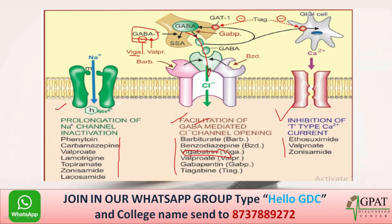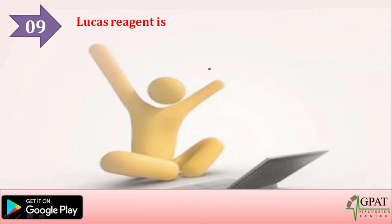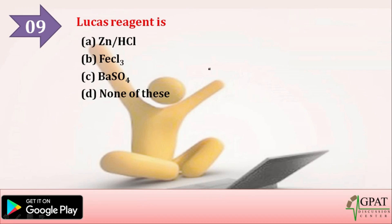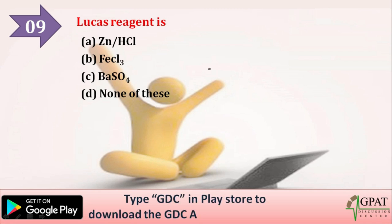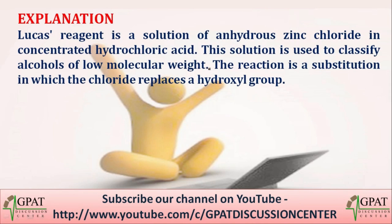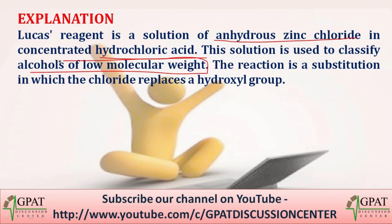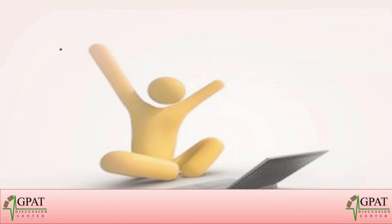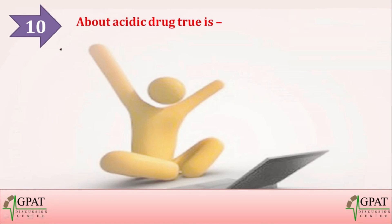The next question: Lucas reagent is — option A: ZnSO₄/HCl, option B: FeCl₃, option C: BaSO₄, option D: none of the above. The correct answer is ZnCl₂. Lucas reagent is a solution of anhydrous zinc chloride in concentrated HCl, used to classify alcohols of low molecular weight via a substitution reaction where chloride replaces a hydroxyl group.